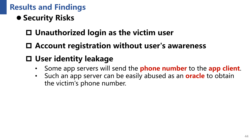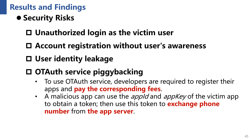The third risk is that the attacker can disclose the victim's phone number. When some app servers receive the phone number from the MNO server, they insecurely return this phone number to the app client, making it easy for an attacker to abuse the app server as an oracle to obtain the victim's phone number. The fourth risk is One-Type Authentication service piggybacking — developers are required to pay fees to use the service, but an app could abuse the One-Type Authentication service of other registered apps for free and unauthorized use.